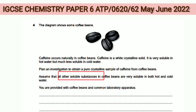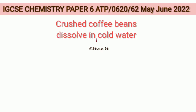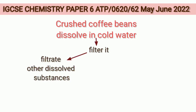Here we are asked to obtain pure crystalline caffeine from coffee beans, so we have to separate other soluble substances present. If you read the question carefully, caffeine is soluble in hot water but much less in cold water, whereas other substances are soluble in both hot and cold water. So our plan will be to dissolve crushed coffee beans in cold water and filter it — the filtrate contains other soluble substances, which get separated from caffeine, since caffeine is much less soluble in cold water and will remain in the residue.